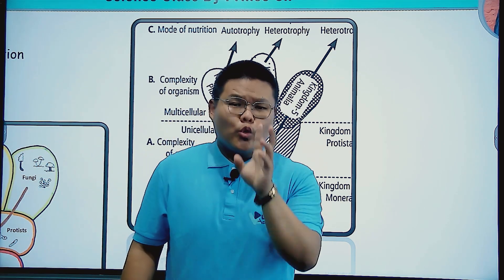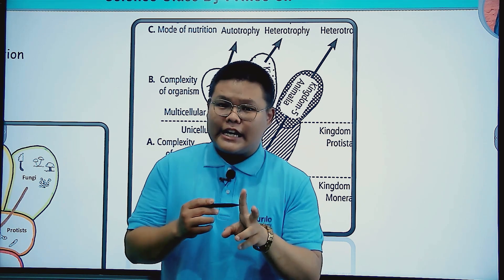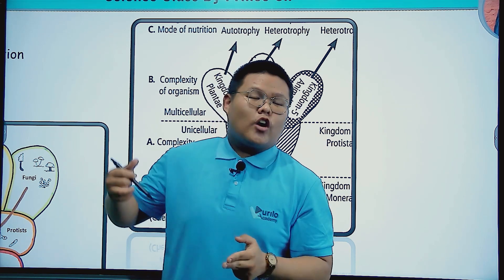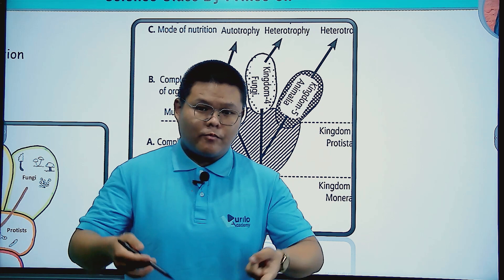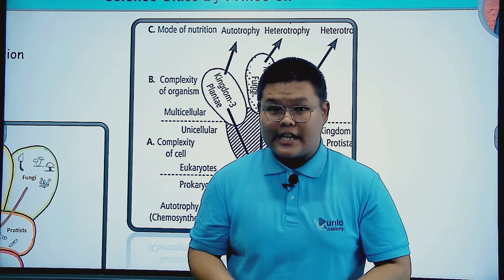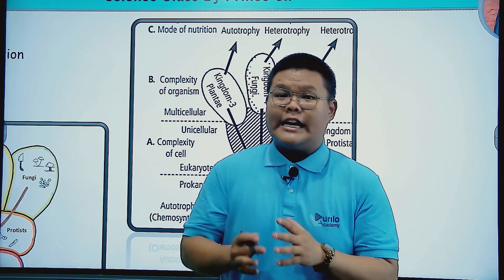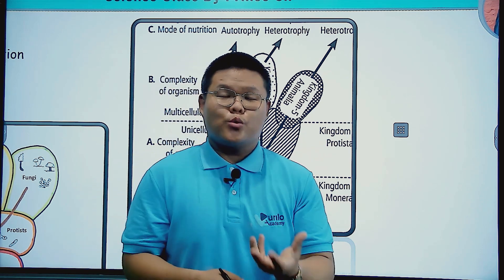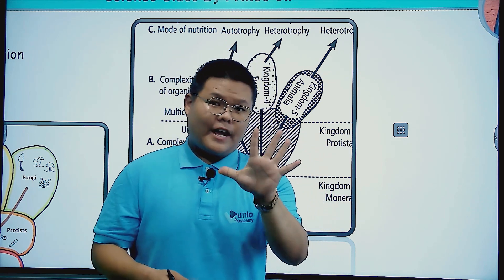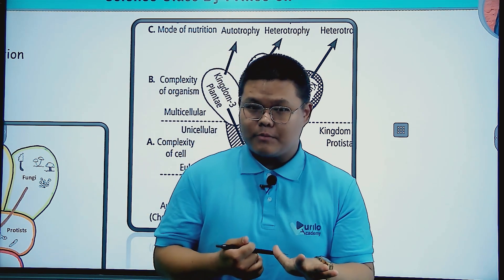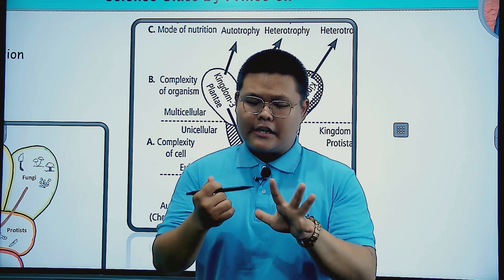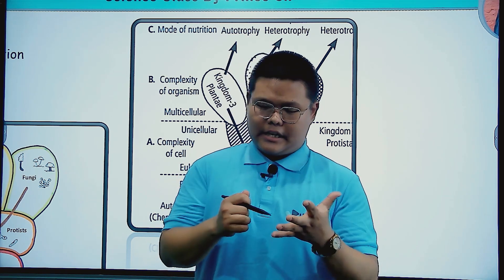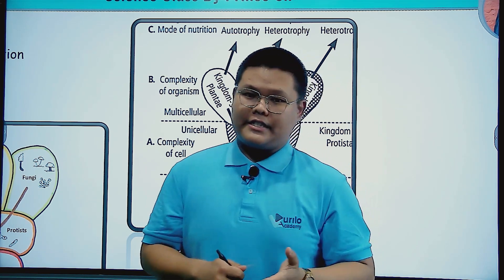In the two kingdom classification, there were only Kingdom Plantae and Kingdom Animalia. Later, considering the complexity of body organization and cell structure, the five kingdom classification was introduced, comprising Kingdom Monera, Kingdom Protista, Kingdom Animalia, Kingdom Fungi, and Kingdom Plantae.